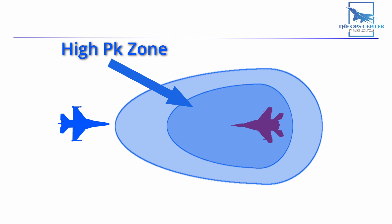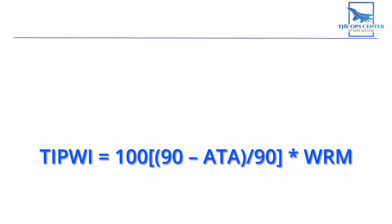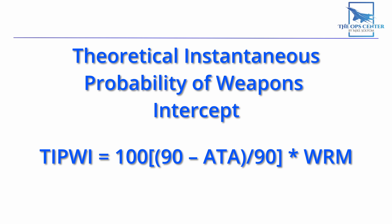So how does this all come together to form a WEZ that's useful to a pilot? The numbers are run through this formula by a computer to present a final number in the range of 0-100 called Theoretical Instantaneous Probability of Weapons Intercept, or TIPWI. This is the percentage chance of a missile hitting a target at the moment of launch. It's also a very precise estimate of PK, or probability of kill, which is the percentage chance of a hit throughout the entire time of flight.